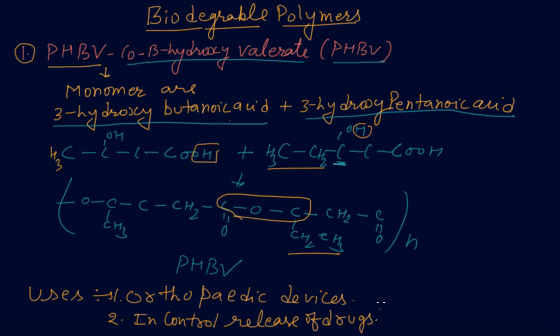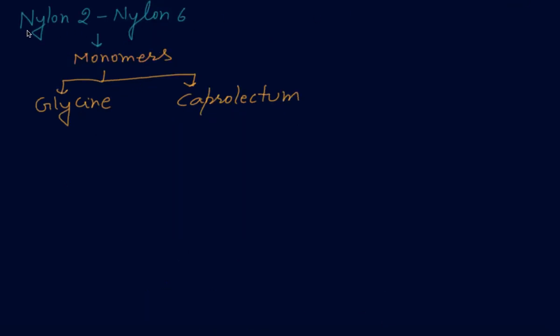Now the second biodegradable polymer is Nylon 2-Nylon 6. Its monomers are glycine and caprolactam. Glycine you are remembering that we have done in the biomolecular chapter - neutral amino acid with NH2 CH2 COOH. And caprolactam, you have learned the formula. It is biodegradable, and you must learn and then revise all the polymers.